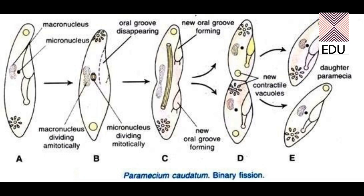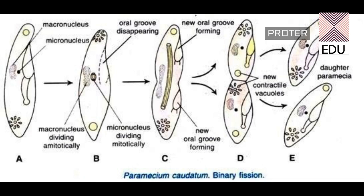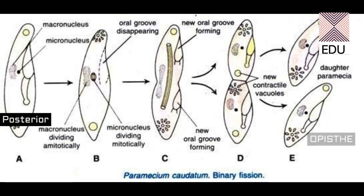In the fourth diagram, you can see both nuclei have divided and shifted into different cells. The contractile vacuoles also appear in the new individuals. In the E diagram, both paramecia have separated. The paramecium formed from the anterior end is called the proter, and the daughter paramecium formed from the posterior end is called the opisthae.